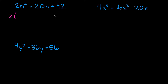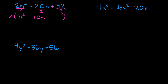So if we pull a 2 out, what are we left with inside of these parentheses? Well, we basically divided by 2, so the 2 on top and bottom cancel out — we're just left with n squared. Then here again we divided by 2: 20 divided by 2 is 10, so we have plus 10n. And then 42 divided by 2 is 21, so plus 21.